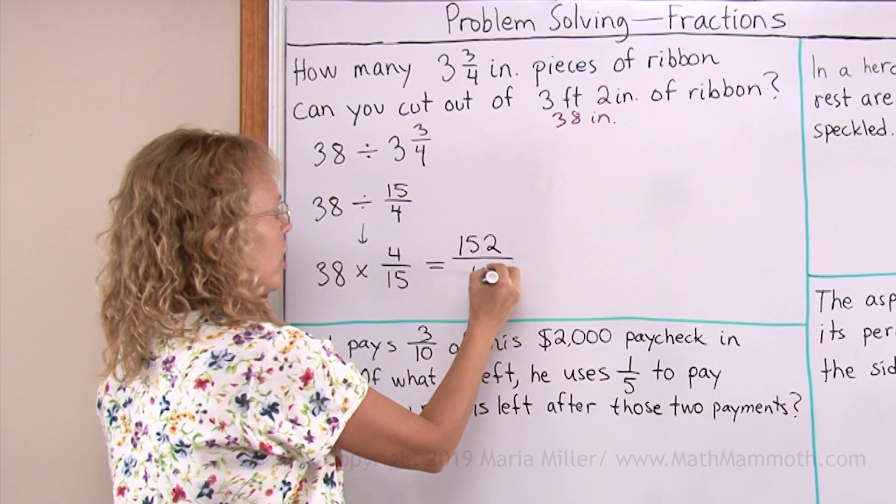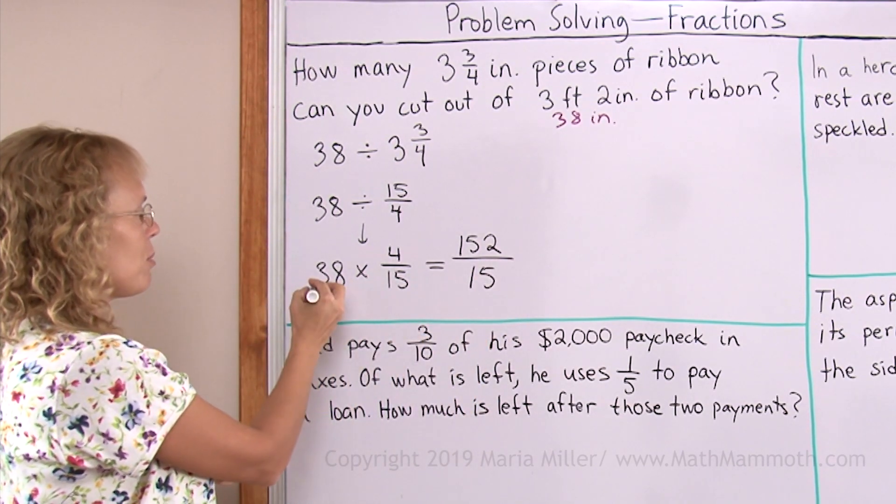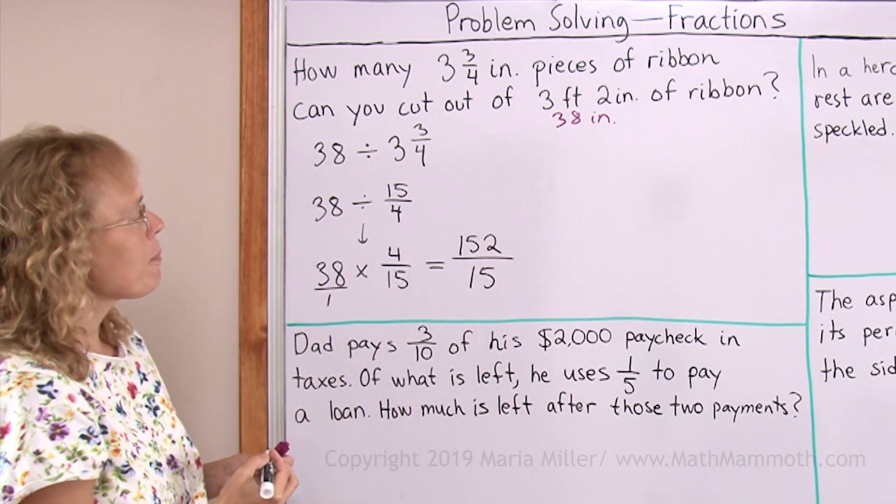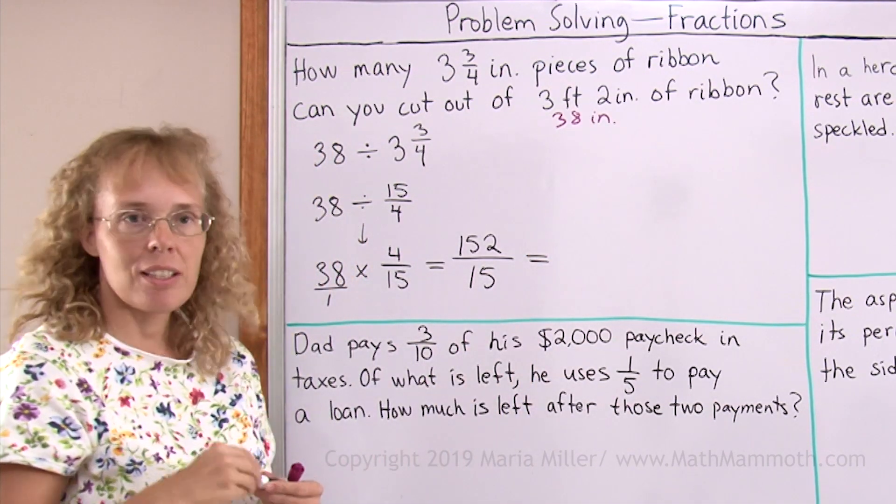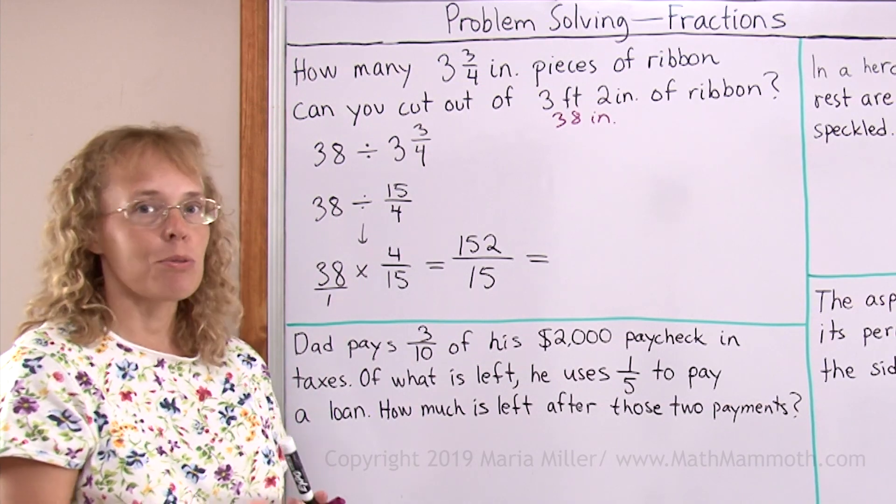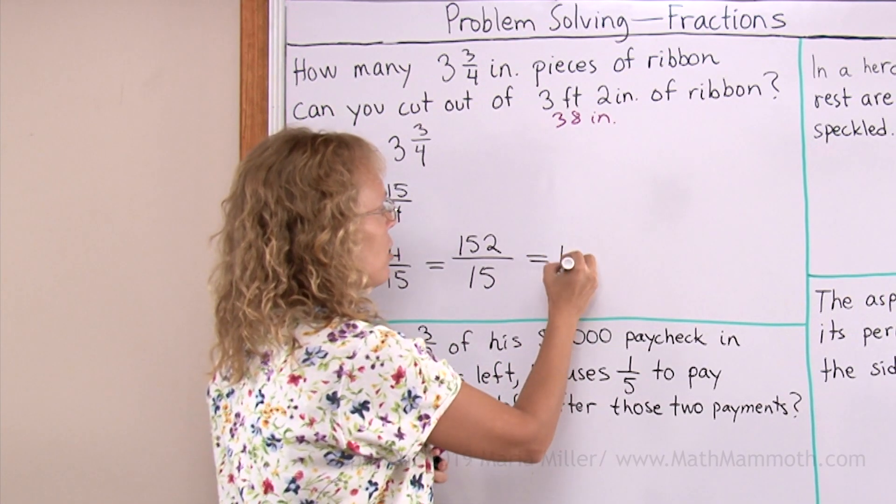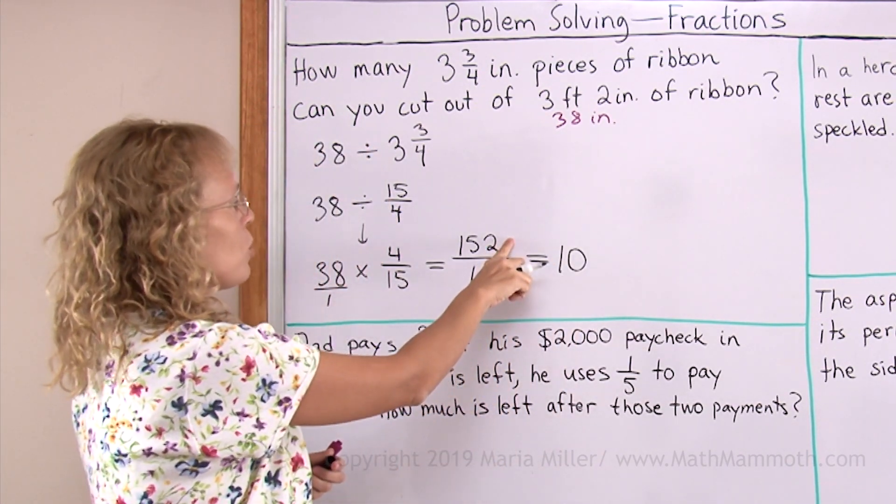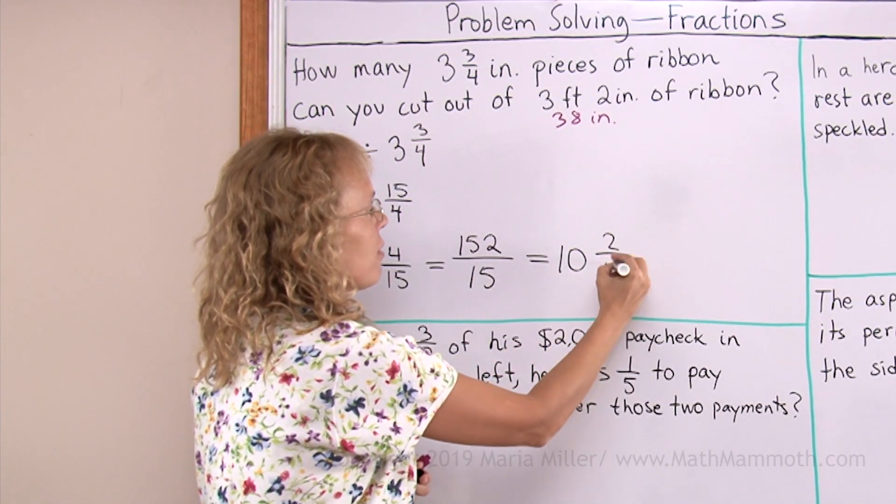15 does not change. It is like 15 times 1. If you imagine this being 38 over 1. Now this division is pretty easy because 150 divided by 15 would be an even division. We would get 10. And we get 10 here too. But then we have the 2/15ths left over so to speak.